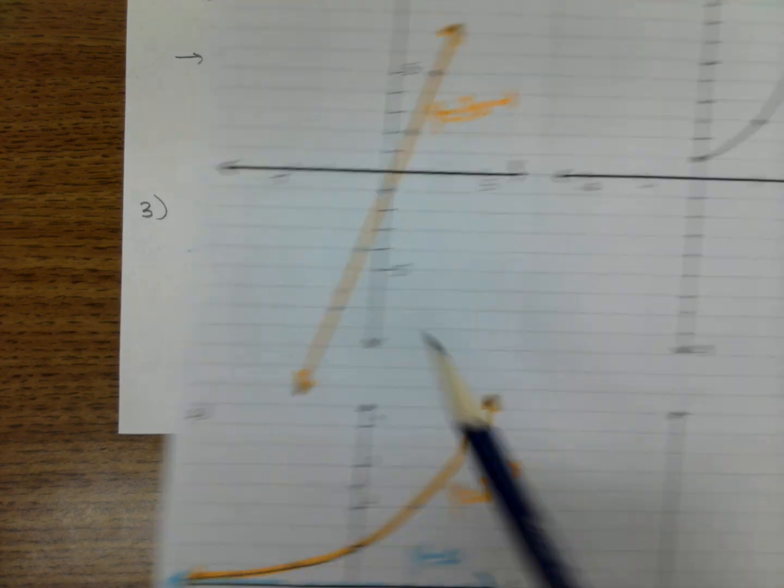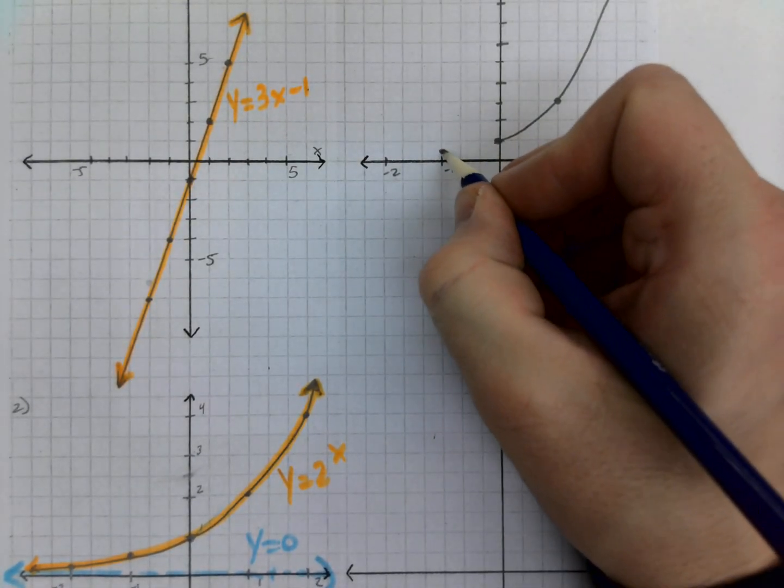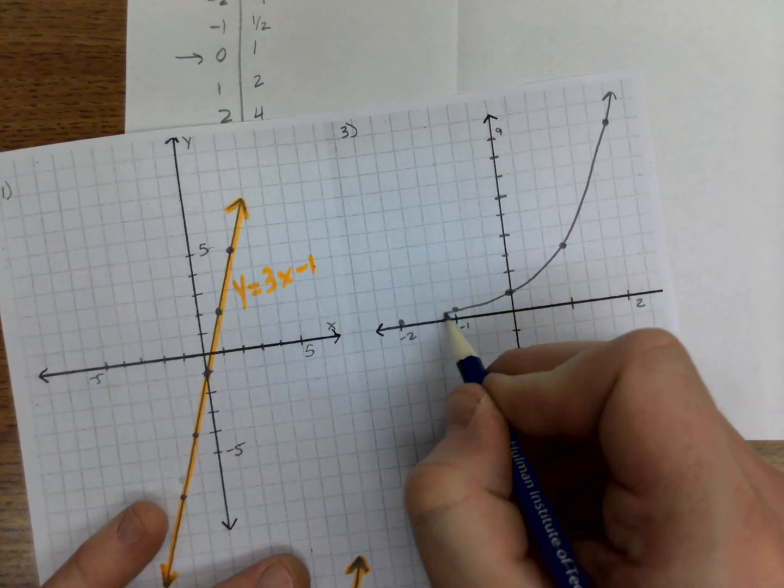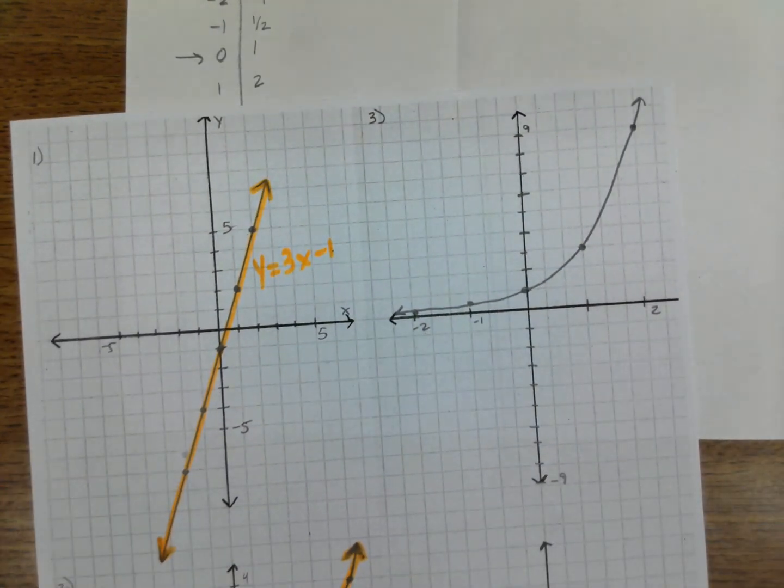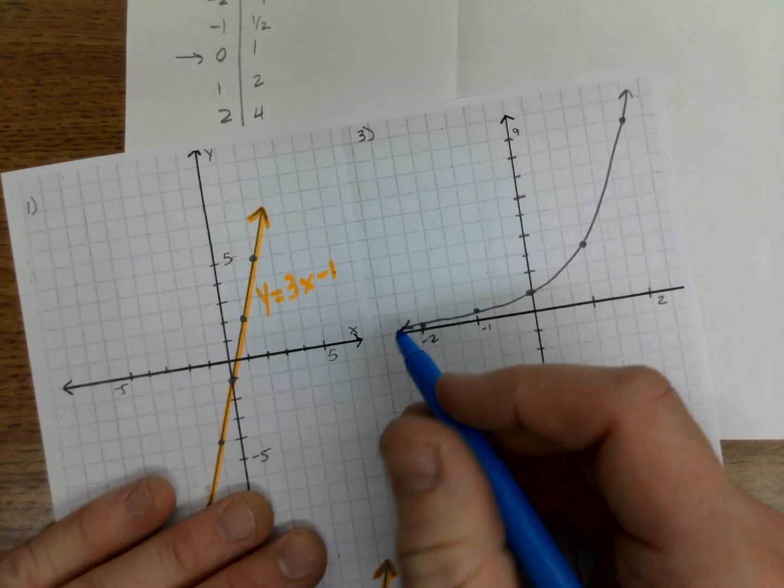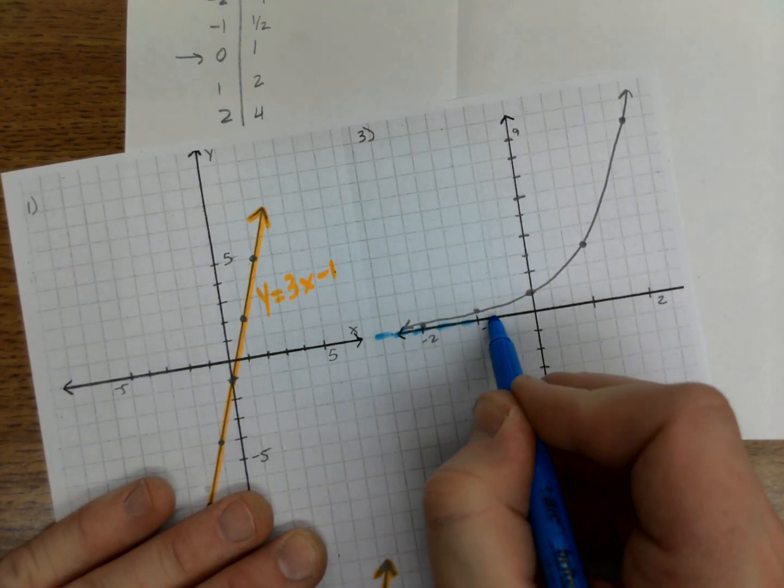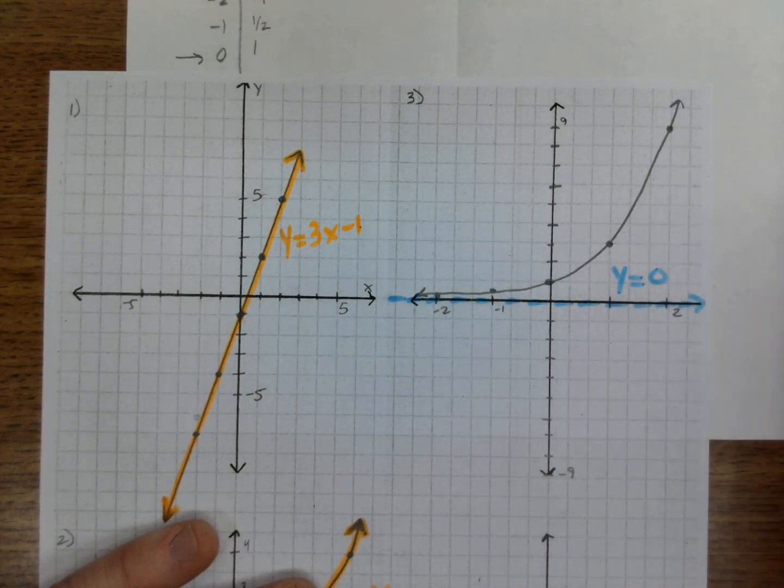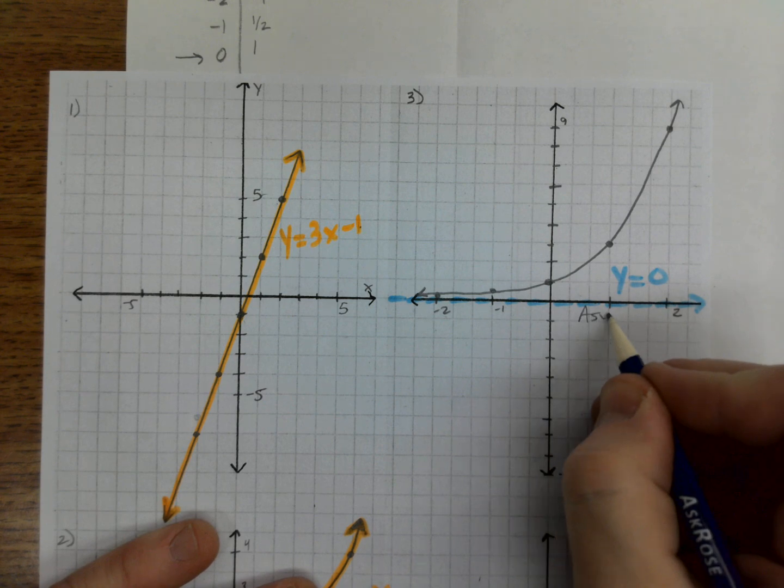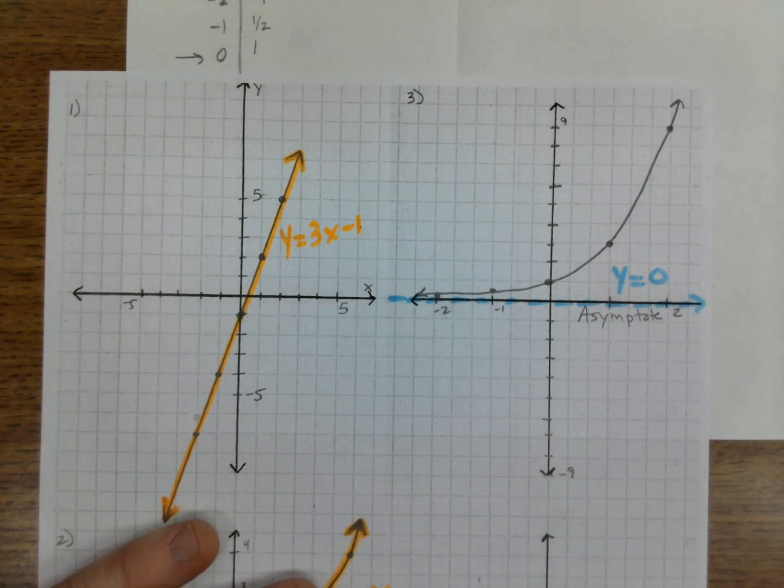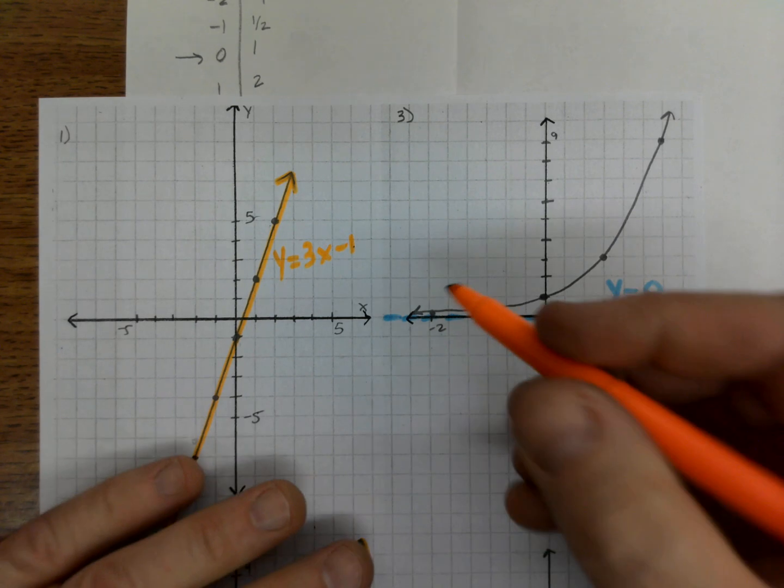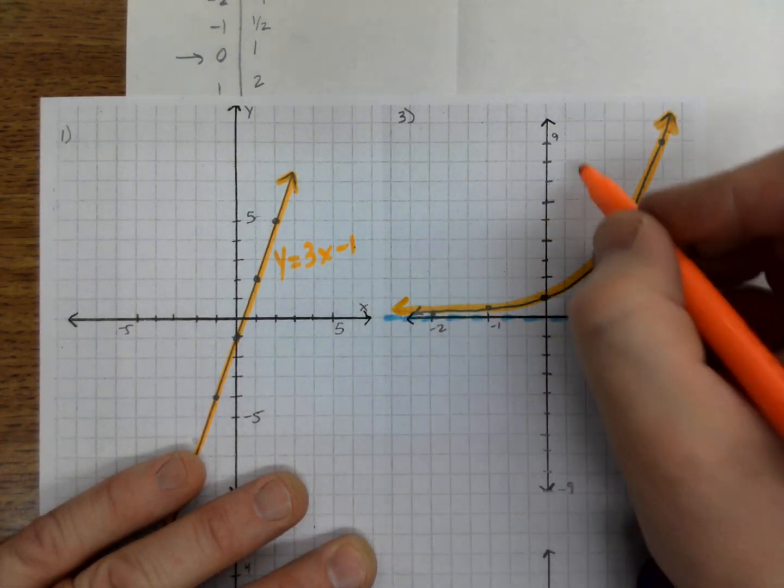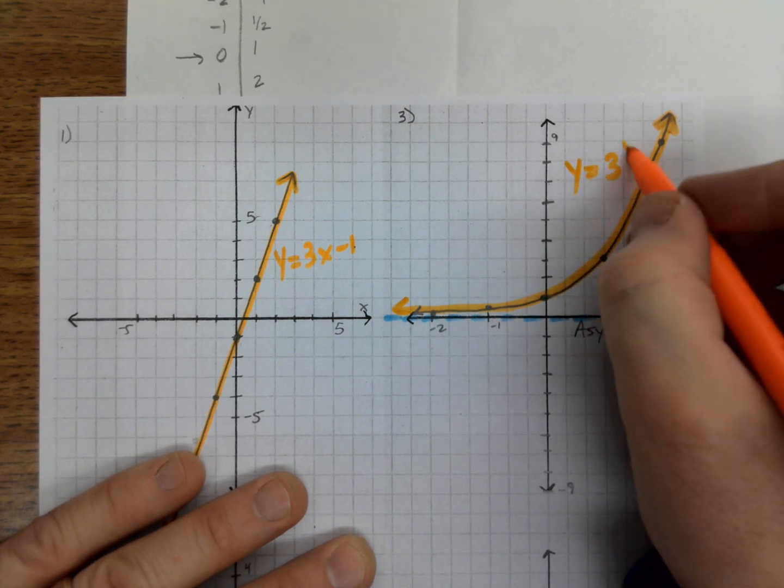Then going backwards, these little fractions. Negative 1 is a fraction 1 third. Then negative 2 is a smaller fraction. Then the fractions just keep getting smaller. They don't go away, though. So we have two parts to the graph. We have a blue line going this way that's dashed. Y equals 0. Again, that's called the asymptote. It's like the border. You can't cross that line right there. And then we have this line going up right here, which is the graph, y equals 3 to the x.